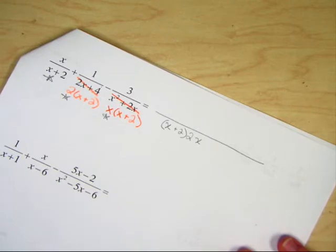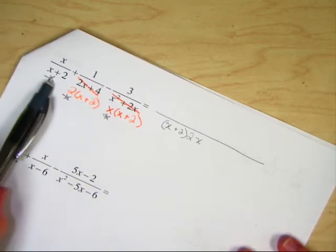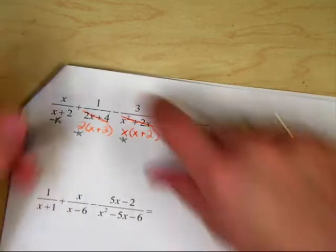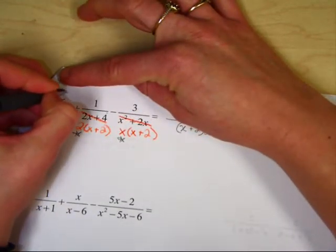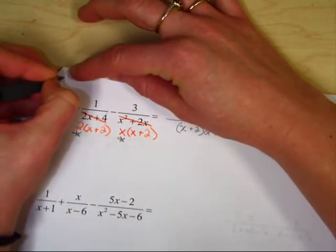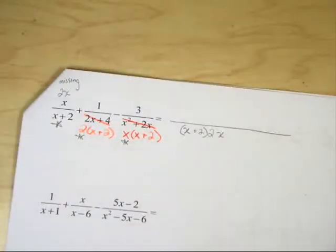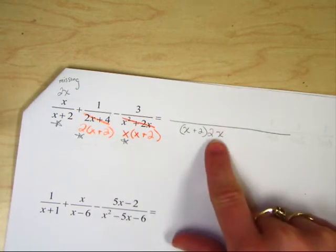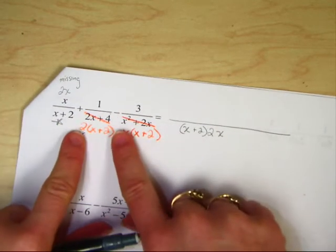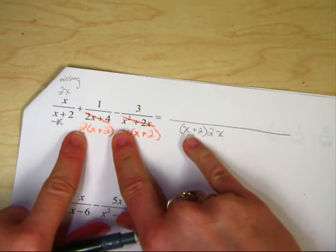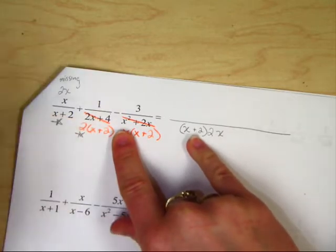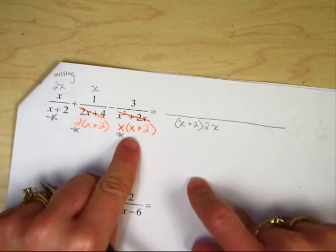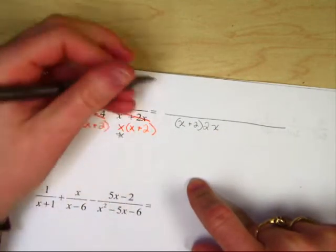Now what I need to do is figure out what is missing. This particular one, if we compare, this one is missing a 2 and an x. I'm writing missing. This one is missing a 2x from over here. Now let's move on. What are these missing compared to here? An x. What is this one missing? A 2.